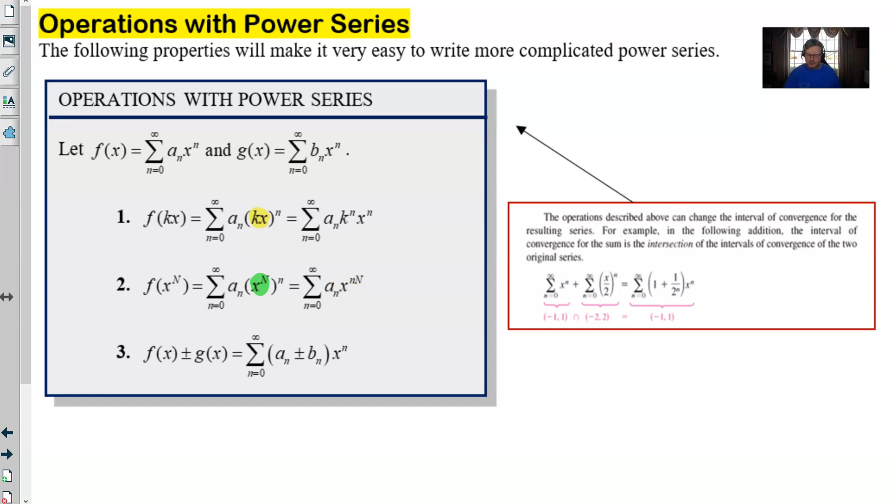And then lastly, and I think this is probably going to be more logical, is that if you're adding or subtracting a couple of functions that are represented by power series, you can go ahead and just combine them. You can add or subtract the power series. And in this particular case, we kind of factored out this x to the n and wrote it at the end as the a sub n and the b sub n are going to sort of work together as the coefficient of that x sub n. And so a lot of these are probably things that you would assume to have been true in the first place.